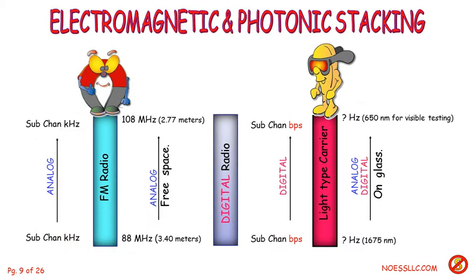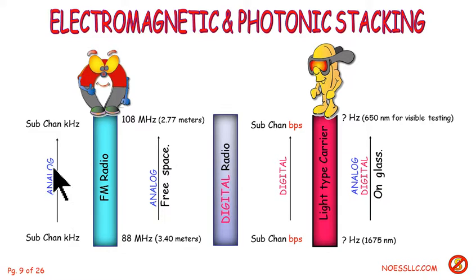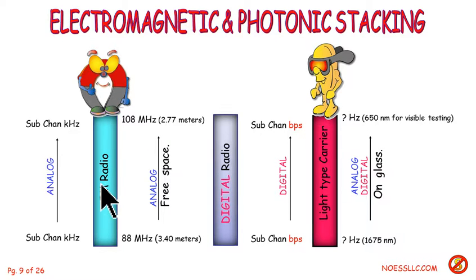Moving up in the frequency range, we'll look at FM radio — frequency modulated radio. So we bring in a talk radio signal, bring in an analog signal, heterodyne it in the FM radio, and come out with an analog signal — a waveform running somewhere between 88 and 108 megahertz. I've given you the meter spec here too.